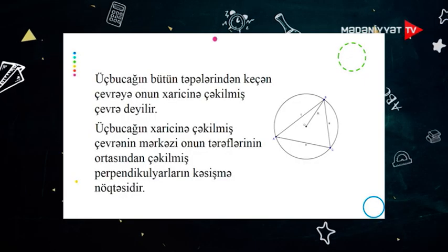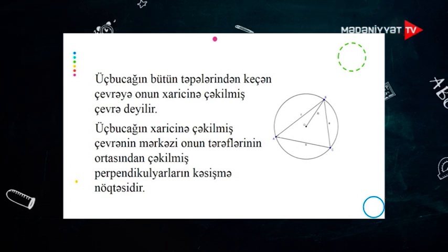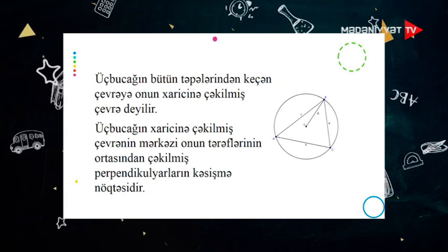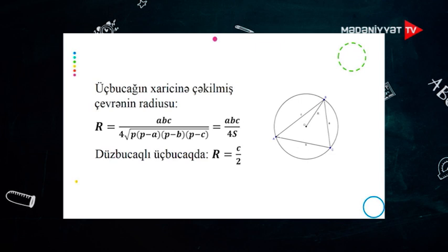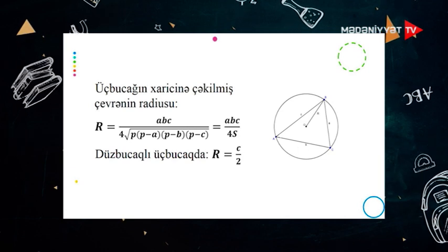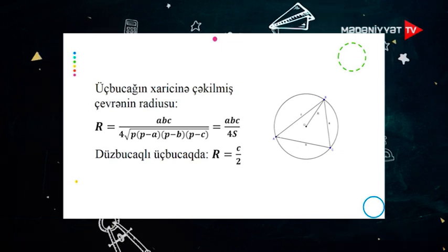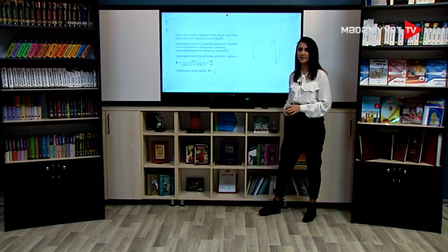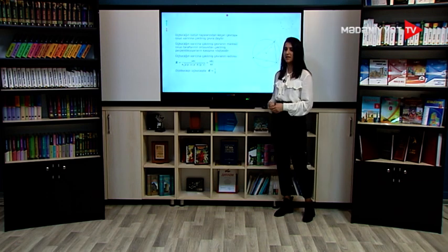İndi isə üçbucağın xaricindən çəkilmiş çevrədən danışacaq. Üçbucağın bütün təpələrindən keçən çevrəyə onun xaricindən çəkilmiş çevrə deyilir. Bu çevrənin mərkəzi üçbucağın tərəflərinin ortasından çəkilmiş perpendikulyarların kəsişmə nöqtəsidir. Radiusun tərəflərlə ifadəsi: böyük R = (a × b × c) / (4 × √(p(p−a)(p−b)(p−c))), bu da bərabərdir abc / (4S)-yə. Düz bucaqlı üçbucaqda xaricindən çəkilmiş çevrənin radiusu c / 2-yə bərabər olacaq, burada c hipotenustur.